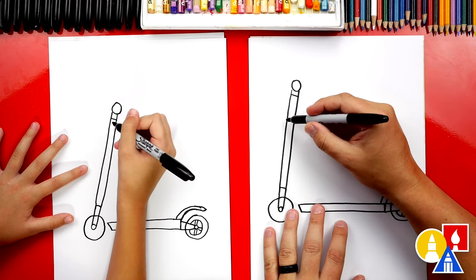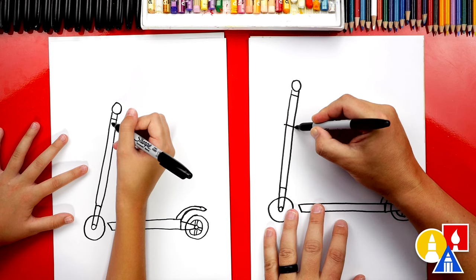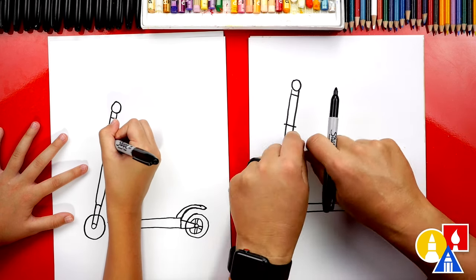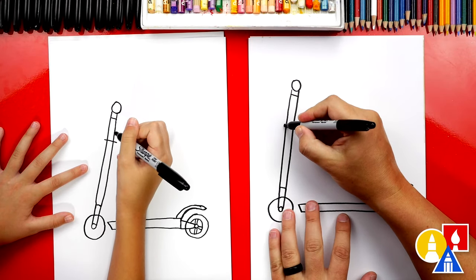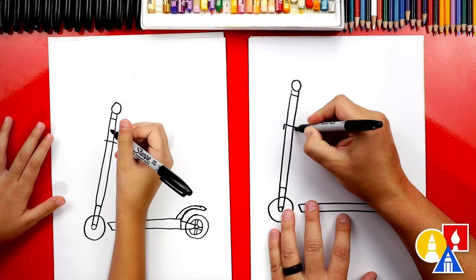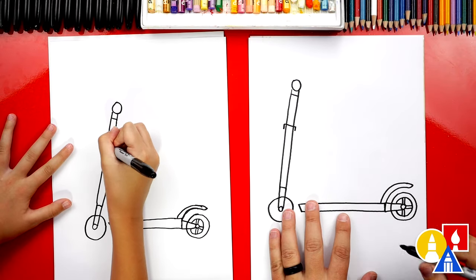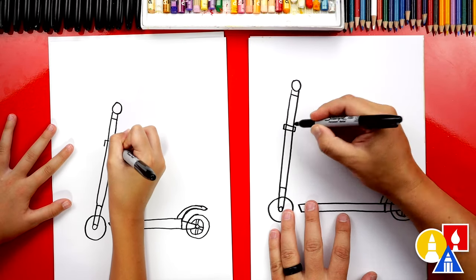Then we're gonna come down a little further and we're gonna draw another short line except we're gonna go past. This is for the clamp. You can loosen it and then make the steering column a little higher or lower. Then we're gonna draw two lines on the side and then connect the bottom of those two lines.